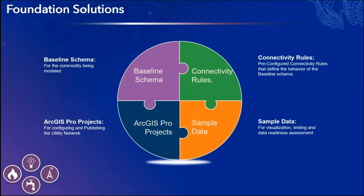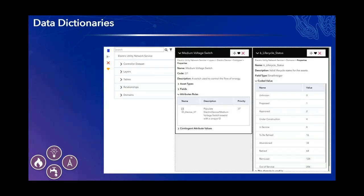To obtain your commodity's foundation solutions, you will need to download and install the ArcGIS Solution Deployment add-in and the Utility Network Package Tools for your ArcGIS Pro client. A data dictionary is provided for each asset package configuration. This allows you to explore the properties of the data model, and this understanding will help you when it comes time to map out your source-to-target data migration.